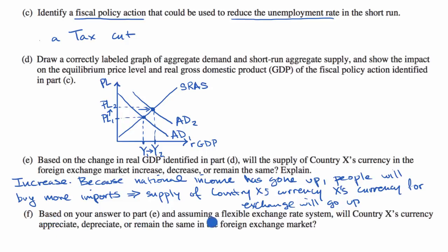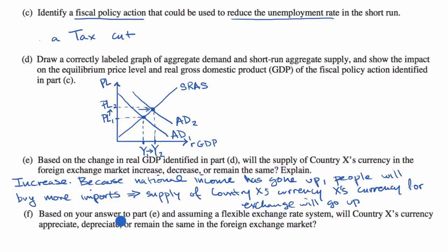Part F: based on your answer to part E, and assuming a flexible exchange rate system, will country X's currency appreciate, depreciate, or remain the same? If you hold all else equal but increase the supply of something, the price goes down. If demand stays constant but supply increases — which is what we discussed in part E — the price goes down. When the price of a currency goes down, we say it is depreciating. So country X's currency would depreciate.